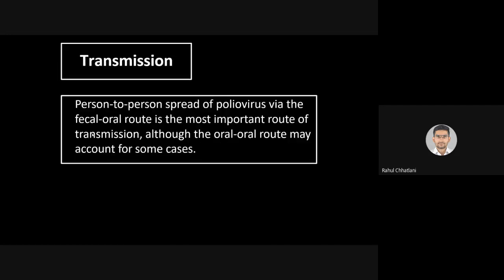Regarding transmission, poliovirus spreads from person to person via the fecal-oral route — through feces and the oral route. That is the most important route of transmission. The oral-oral route — through saliva — may also account for some cases. So both fecal-oral and oral-oral transmission are possible.